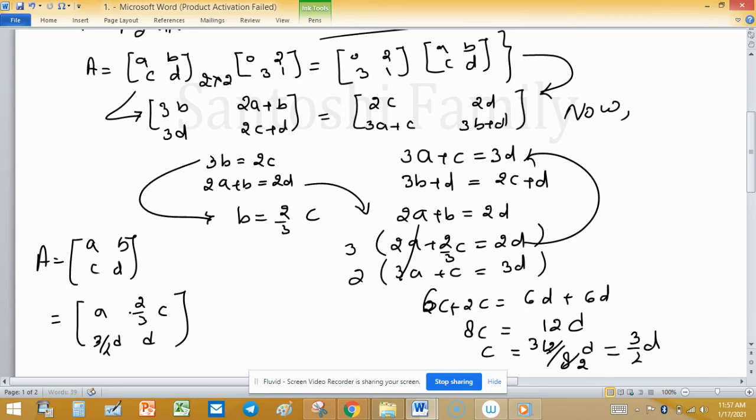So if we know the value of c, you can replace this by (3/2)d. So this depends only on d, so this equation can be written as [a, d; (3/2)d, d].